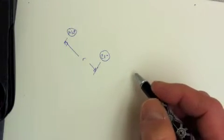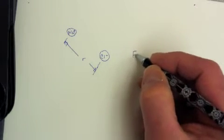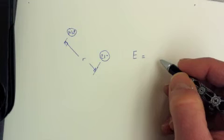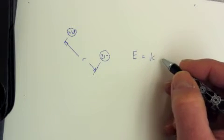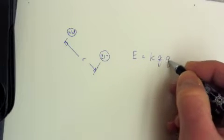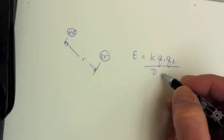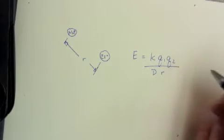And we can describe the energy of the interaction between these two charges using Coulomb's law, which states that energy is equal to some proportionality constant times the product of the two charges divided by the dielectric constant and by the radius, or the distance.